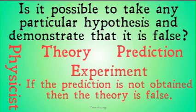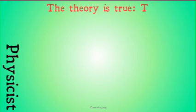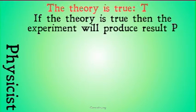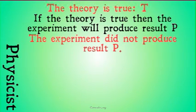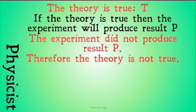But there seems to be a bit of a problem here. We'll represent the theory being true with T. If the theory is true, then the experiment will produce result P — T implies P. The experiment did not produce result P — not P. Therefore, the theory is not true. This seems to be just a classic use of modus tollens.